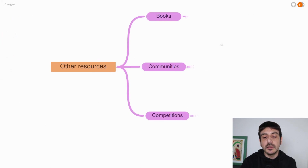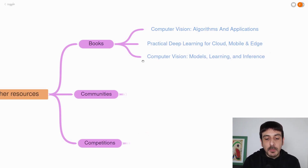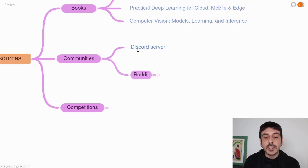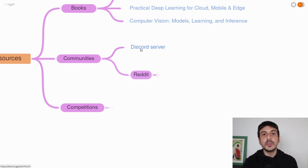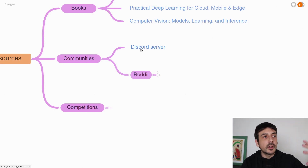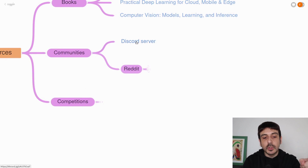You also have other resources. For example, books — you could read books on computer vision in order to improve your skill sets. These are only a few examples of some books you could read to become a super expert computer vision engineer. Then another very interesting resource is joining a community. This Discord server is this YouTube channel's Discord server — our community. The way it usually works is that members post the projects they are currently working on, and everyone else recommends things they can do with their project. We collaborate in many different ways, helping everyone with their computer vision projects. This is a very interesting resource in order to go deeper into your knowledge.